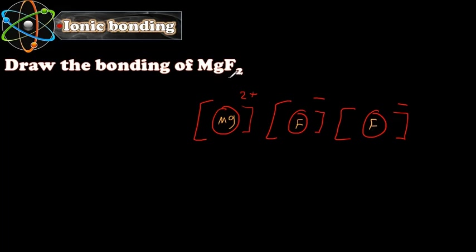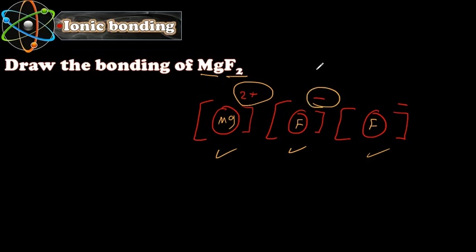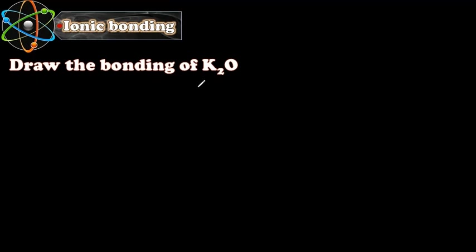So we have two separate fluorine ions. One atom of magnesium here, and two separate fluorine atoms. The magnesium lost two electrons so we write 2+. Each fluorine gained only one electron so we write just − (negative). There is no need to write 1−, just write −.